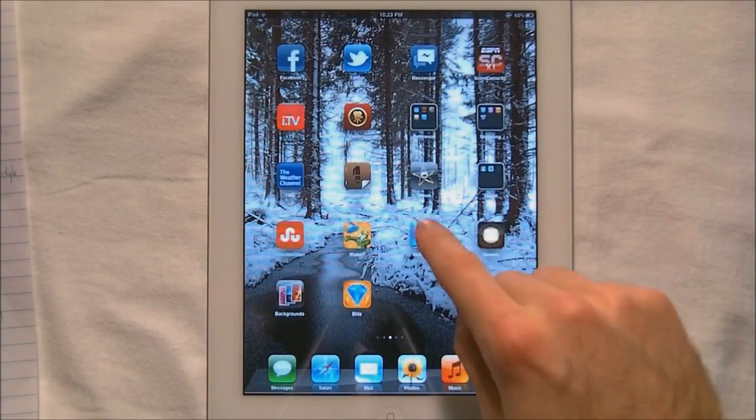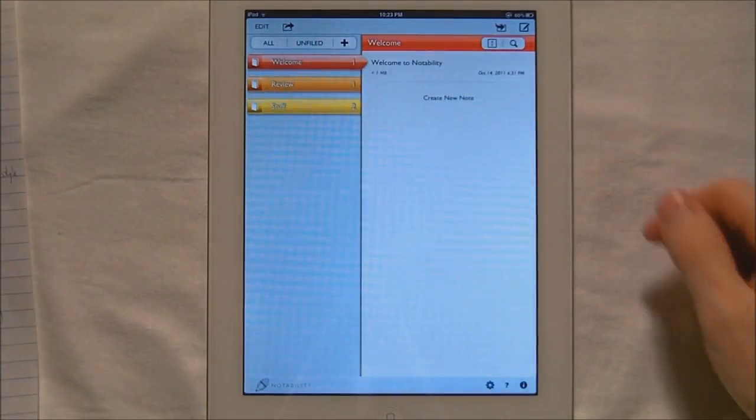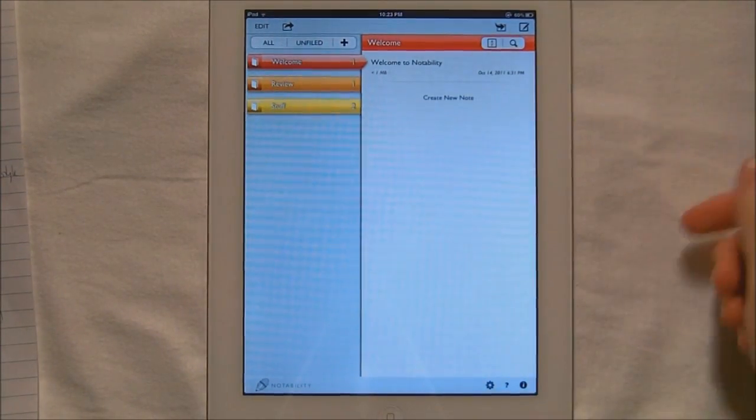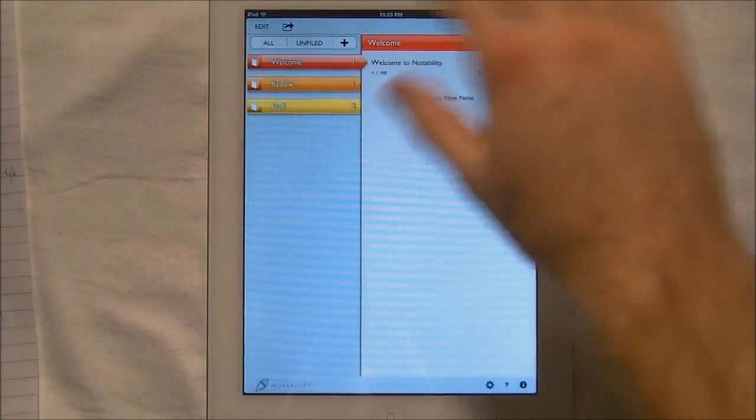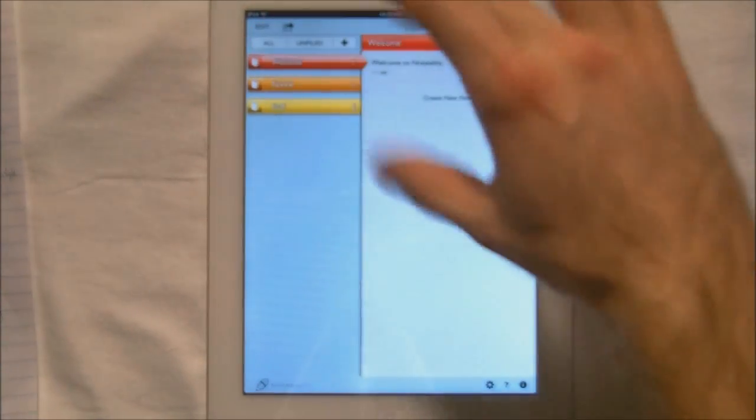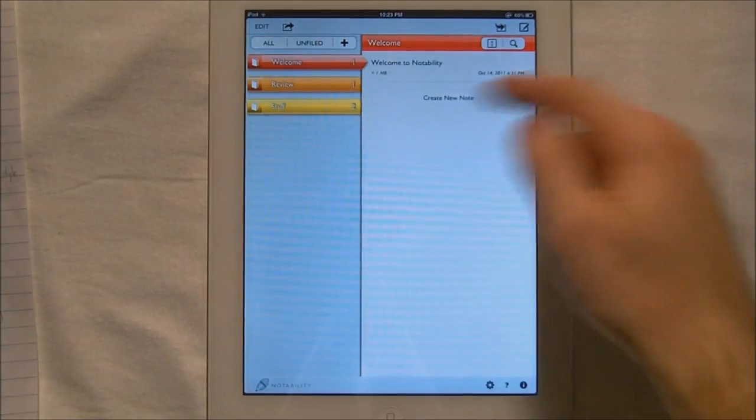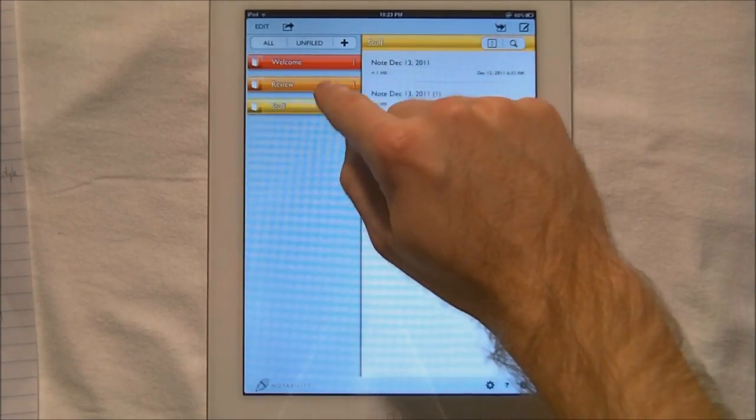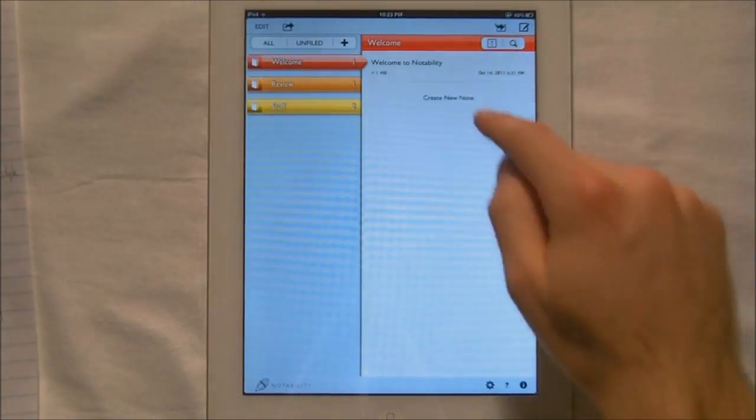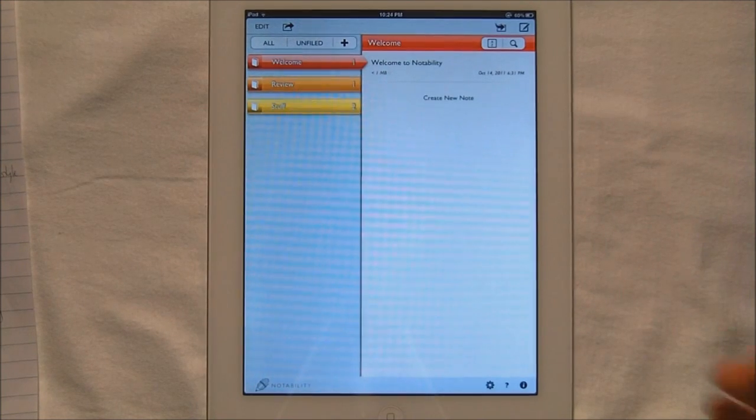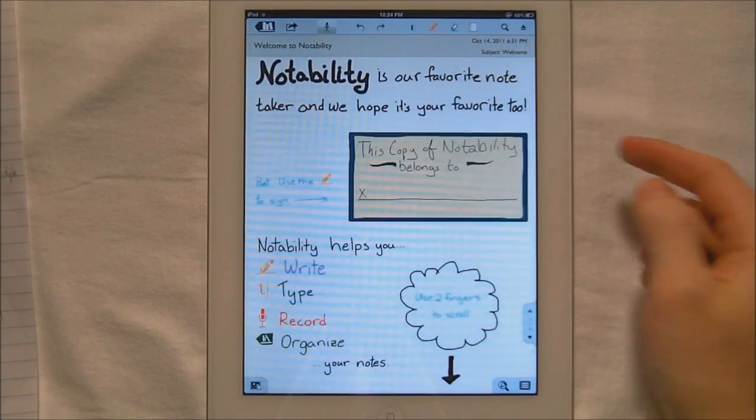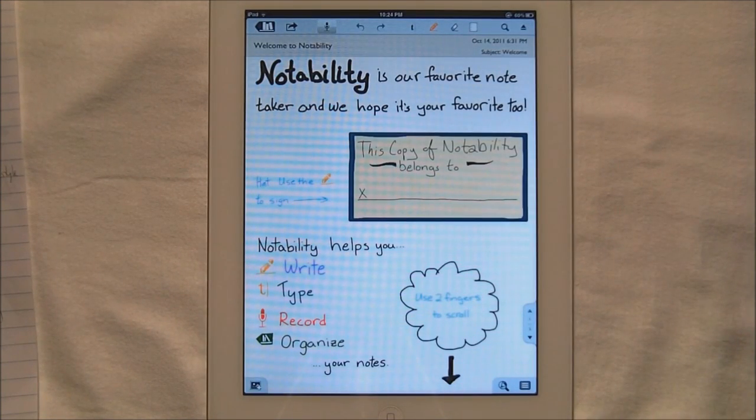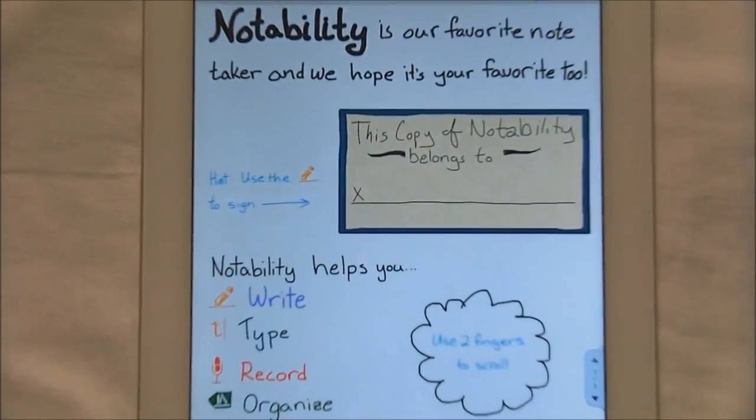It's kind of set up a little bit different than PenUltimate. In PenUltimate you have your different notebooks kind of laid out before you, but your notebooks are kind of here on the side and they're labeled different colors, and you actually get this welcome notebook kind of like PenUltimate, and you can open up and it just gives you a little tour of how things work.